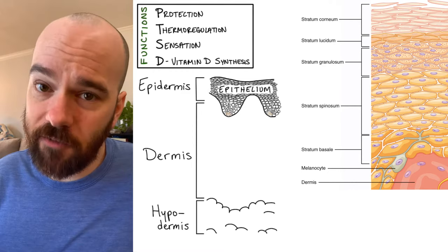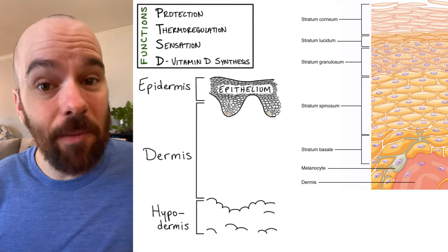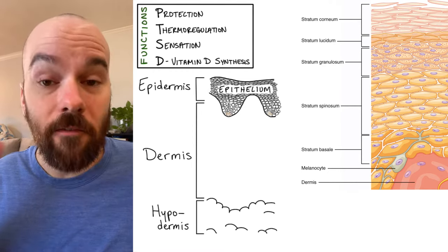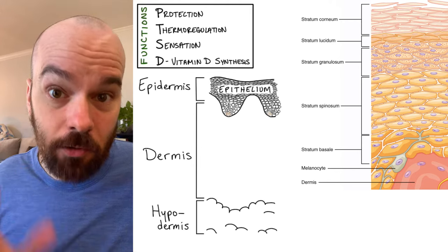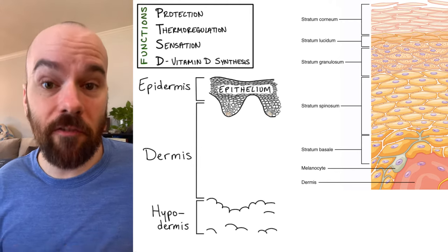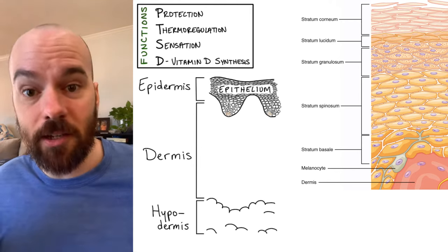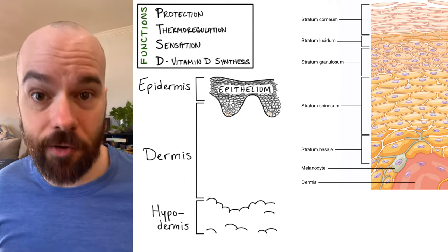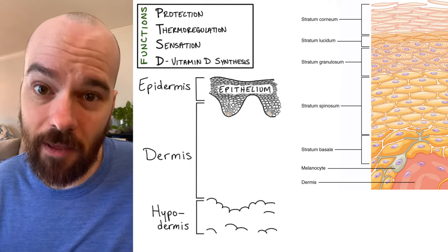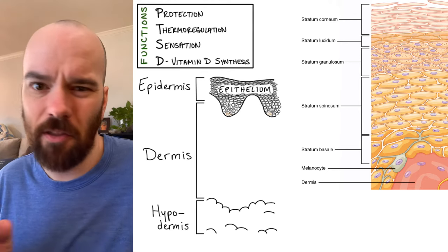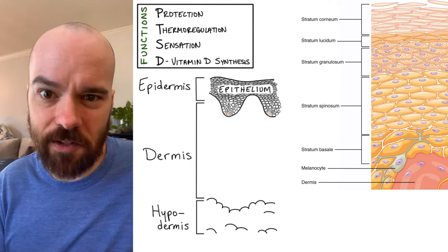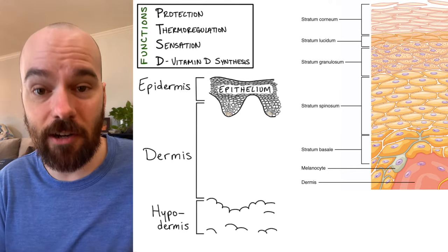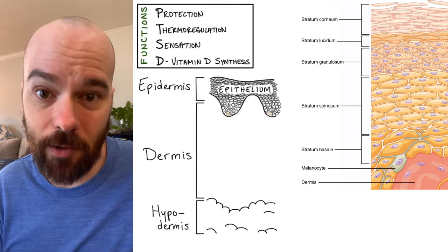Not every part of your skin has all five layers. The stratum leucidum is only found in thick skin, such as in your fingertips or the soles of your feet — the parts of your body that interact with rough surfaces that can damage the skin. Those areas have that extra layer, the stratum leucidum, for additional protection.